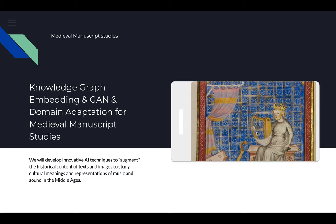Another good application is old images and manuscripts. There are several musical instruments in old images that are quite different from what we see today. With domain adaptation, we hope to automatically understand what's happening in different old manuscripts — in this case medieval studies — allowing musicians or historians to better understand and interpret that era.